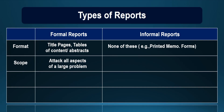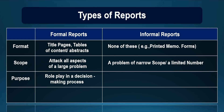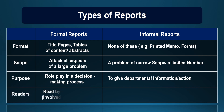The formal report addresses all aspects of a large problem, whereas in an informal report the scope is very narrow or limited. The purpose of a formal report is to play a role in the decision-making process, whereas an informal report provides departmental information or action. The readers of formal reports can be several who are involved with the problem, whereas an informal report is aimed at one person.